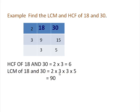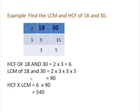So 2 threes are 6, 6 threes are 18, 18 fives are 90. The HCF of 18 and 30 is 6 and the LCM of 18 and 30 is 90. Now look at the product of HCF and LCM: HCF is 6 and LCM is 90. Multiply 6 and 90 — 6 nines are 54, place the 0 at the end — you get 540 as the product of 6 and 90.